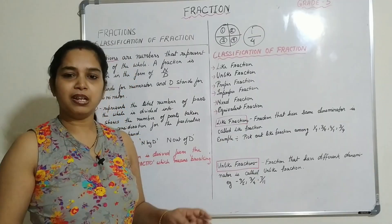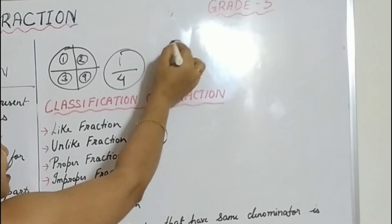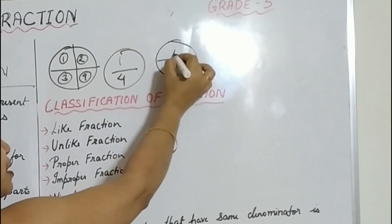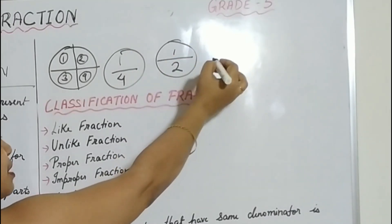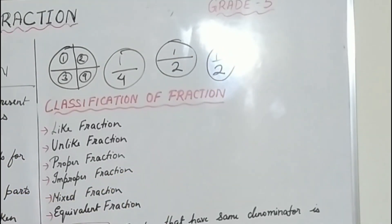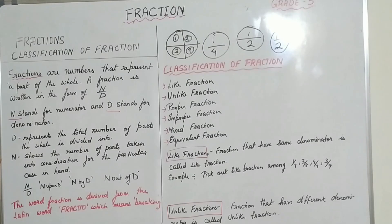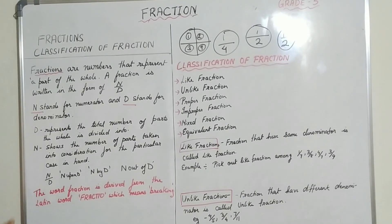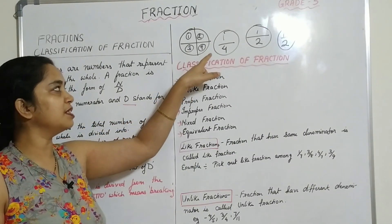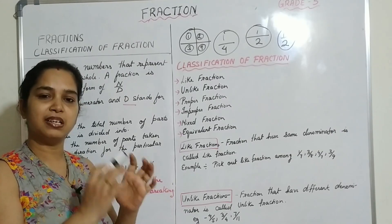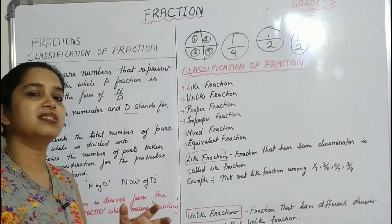Each member gets one-fourth of the total pizza. If a pizza is divided into two equal halves, there are two parts and each member gets half of the total pizza. Fractions are numbers that represent a part of the whole. Here, one-fourth represents a part of the whole pizza, which is the whole quantity.